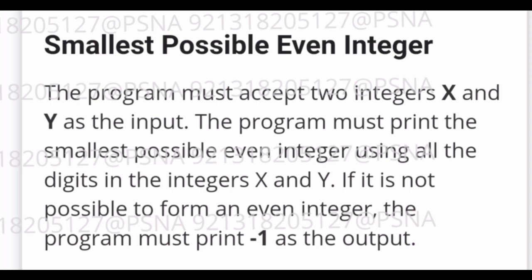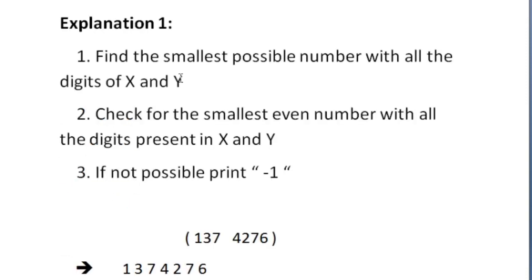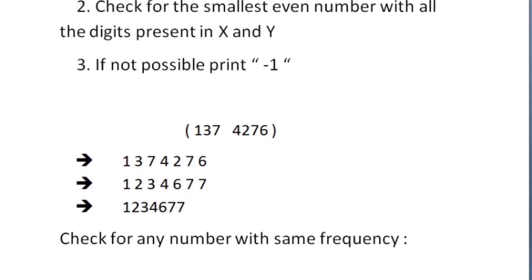This is the question asked in today's skill track daily challenge. We are given two integers x and y as input, and our task is to find the smallest possible even integer which can be formed using the digits in both x and y. For the first test case, the value of x is 137 and the value of y is 4276. We are going to store the digits present in both integers in an array.